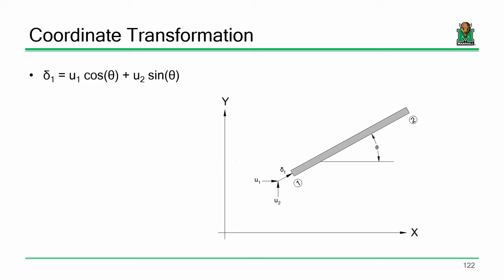I also want you to pay attention to the signs. What direction is U1 going? To the right. What direction is U2 going? Up. They're positive. That's the point — that would be the translation between local displacements and global displacements for delta one.